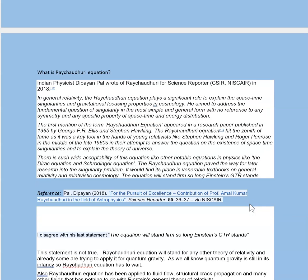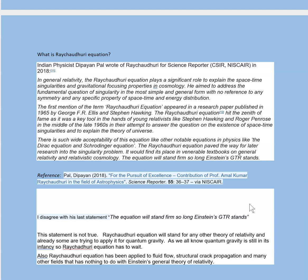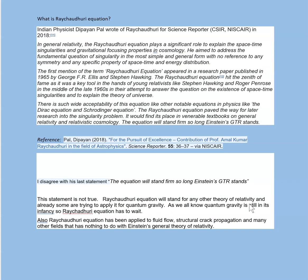And for quantum gravity — which is still under research — the equation is more of a general equation. It was derived in the context of general theory of relativity with the singularity problem in mind, but that has nothing to do with the equation itself. It's more general. It's more geometry. Riemannian geometry has nothing to do with general theory of relativity. General theory of relativity could be proven wrong, but Riemannian geometry is going to be around because that's not going to be proven false.